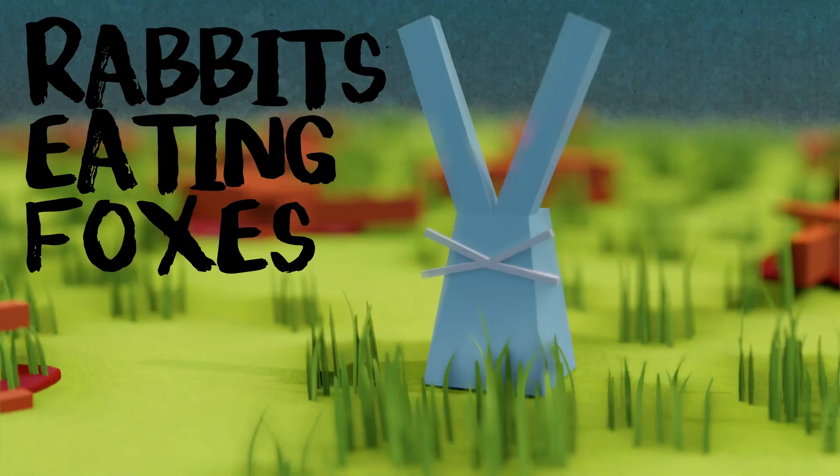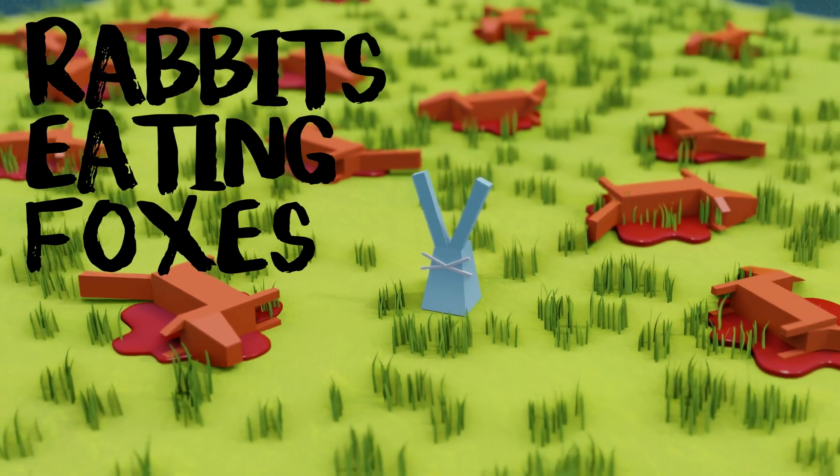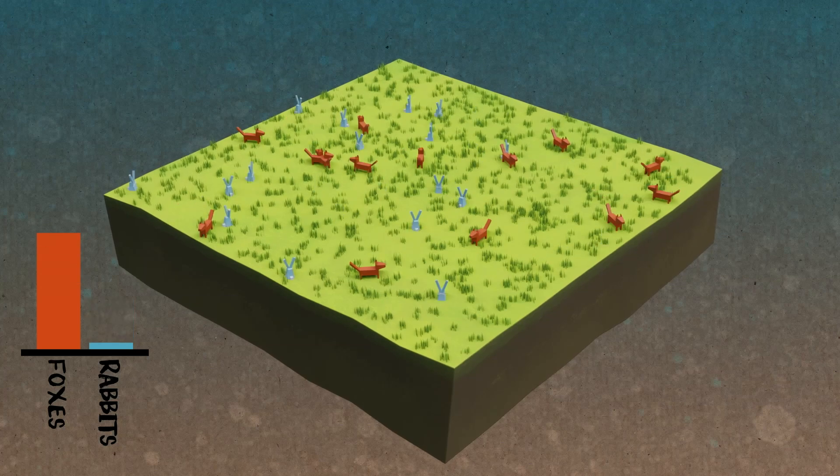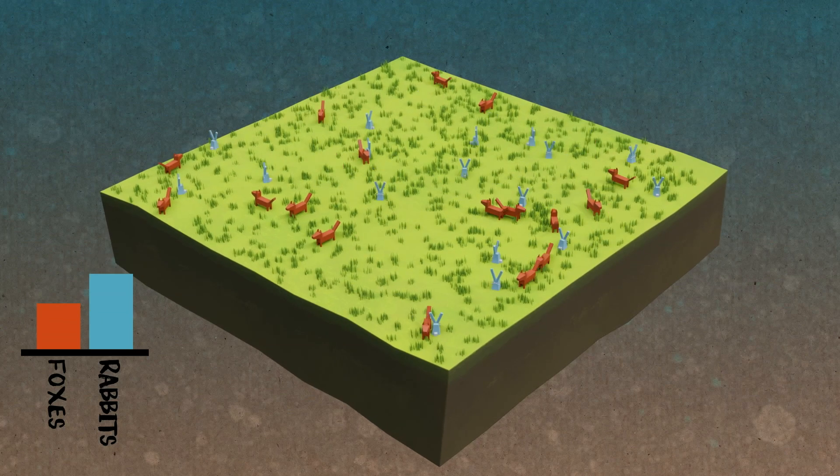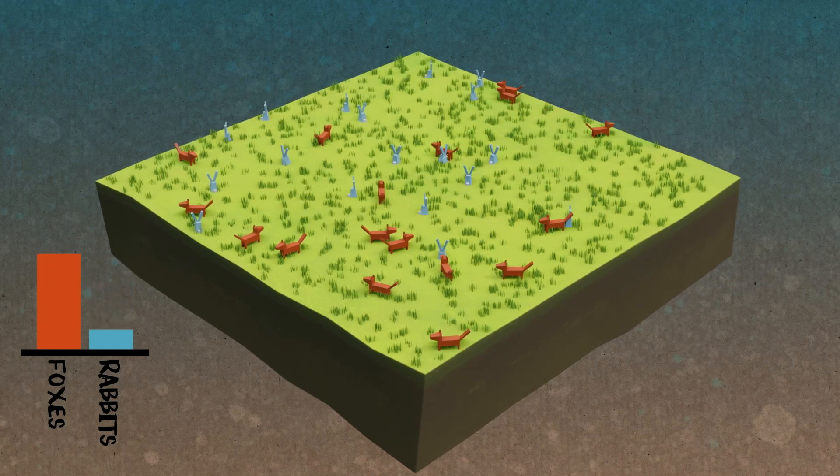We're going to do predator-prey cycles. We're going to do rabbits eating foxes and we're going to try and use math to... rabbits are going to eat foxes? Okay, we're not going to do... well, I mean, maybe? We are doing foxes eating rabbits. Can we mathematically model and explain and predict the changes in the population numbers of that interaction between a predator, in this case a fox, eating the prey, a rabbit?